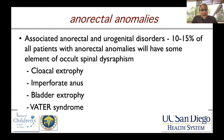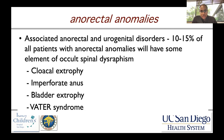Anal rectal anomalies can also be associated with closed neural tube defects. Associated anal rectal and urogenital disorders occur in 10 to 15% of all patients with anal rectal anomalies, and can include cloacal extrophy, imperforate anus, bladder extrophy, and VATER syndrome.